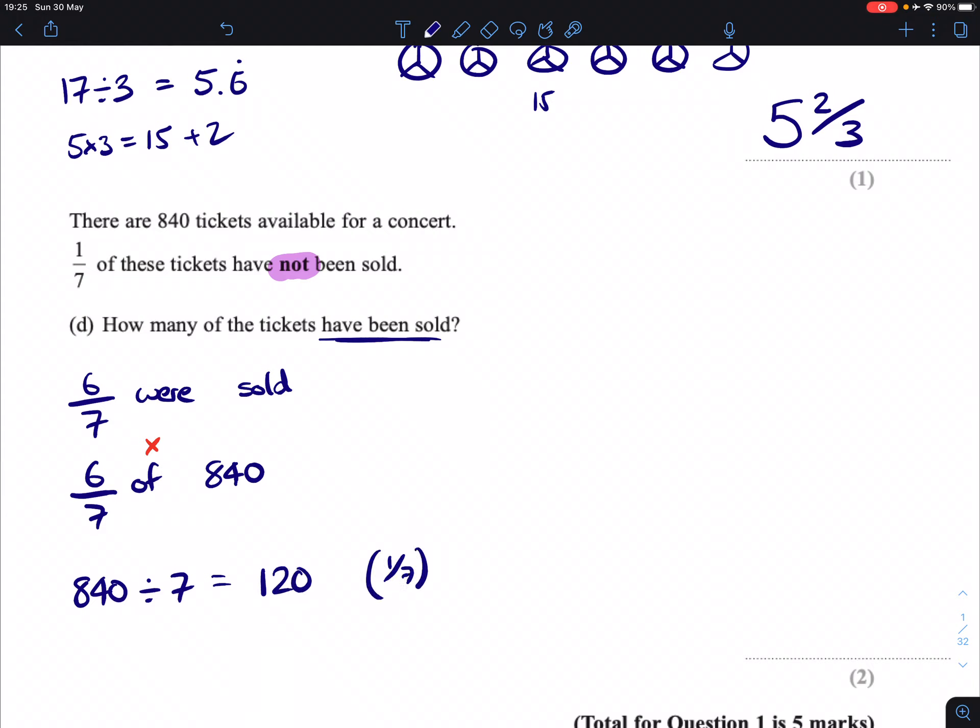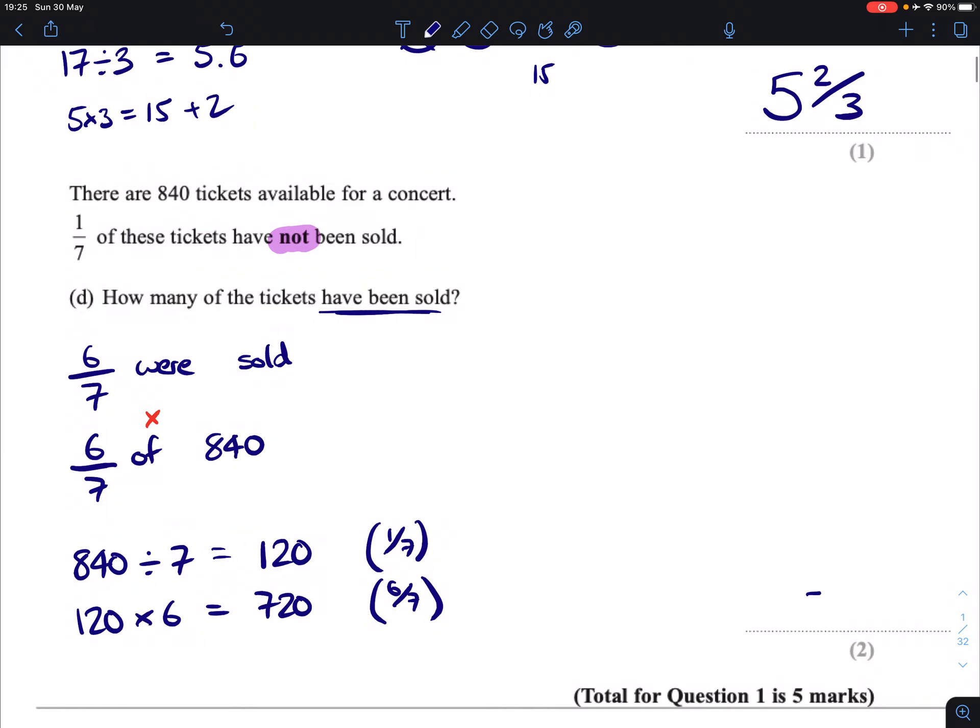That's 1 seventh. And then you would take that 120 and multiply it by 6. It gives us 720. And that is your 6 sevenths, which means that is your answer. So 720. Done.